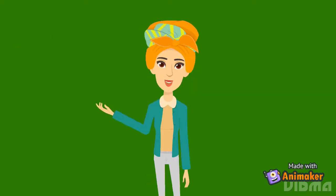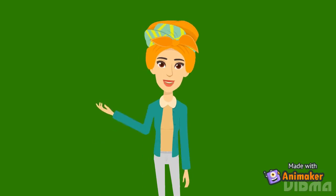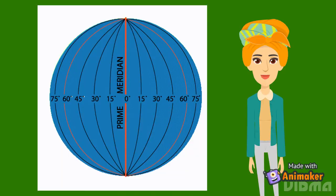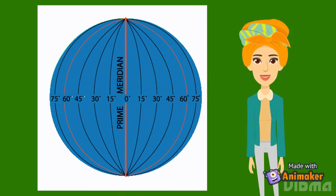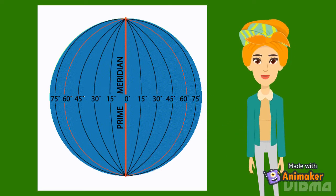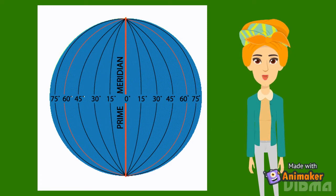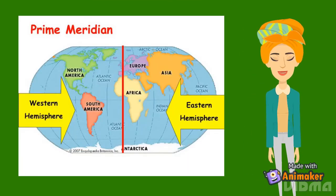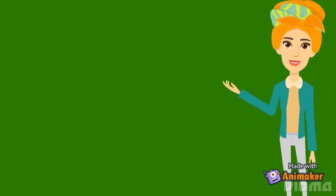Now, let's have a look at the other imaginary lines. Those are the longitudes. These longitudes start from the North Pole, move apart at the equator just to meet again at the South Pole. They also measure in degrees and the longest line of the longitude is the prime meridian. This prime meridian separates the Earth into Western and Eastern Hemispheres.